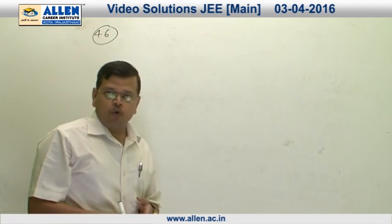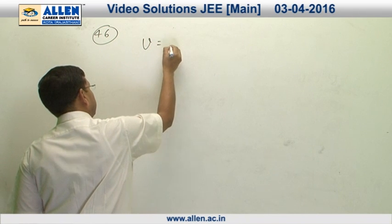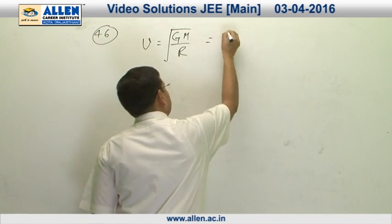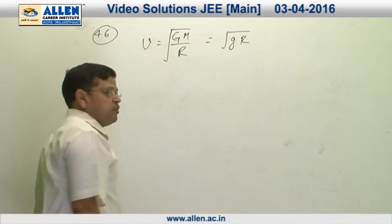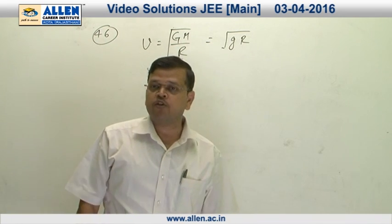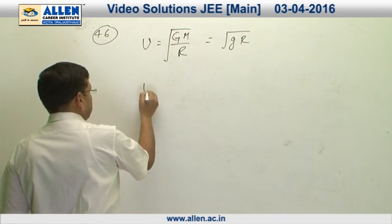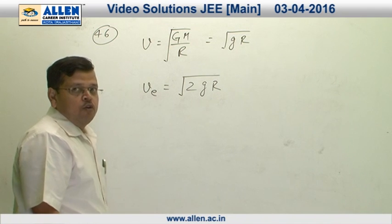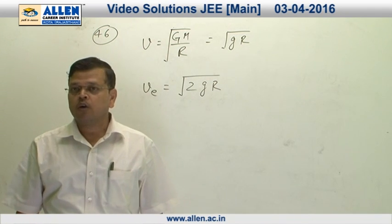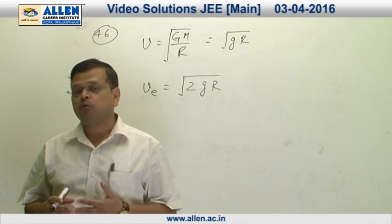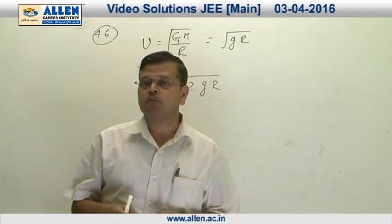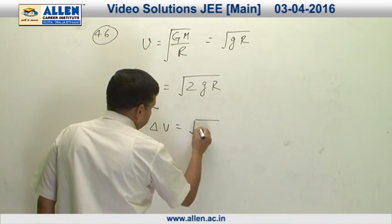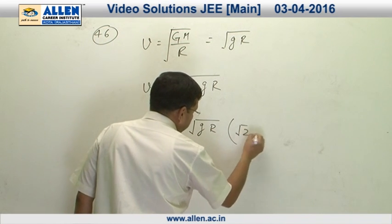If the satellite is orbiting very close to the surface of earth, its orbital speed is given by square root of gR. If you want this satellite to escape the gravitational pull of earth, then the escape speed is square root of 2gR. So the minimum change in speed we must provide is delta v = sqrt(gR) * (sqrt(2) - 1).